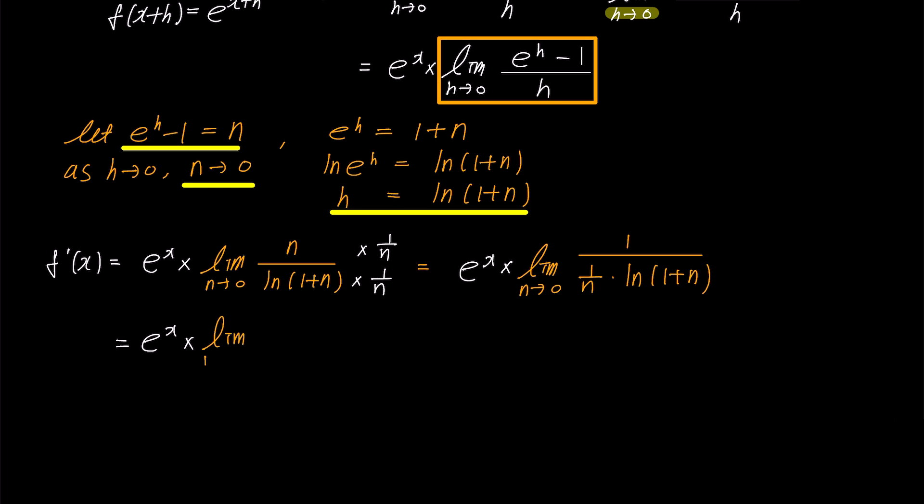...we obtain e to the power of x times the limit of 1 over ln 1 plus n to the power of 1 over n. Since the current limit condition involves n approaching 0, we can apply the limit inside the logarithm function.